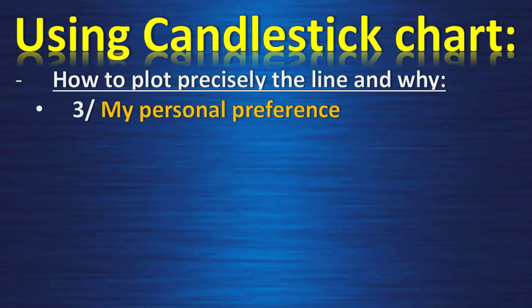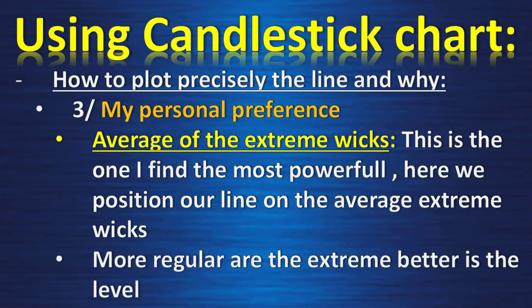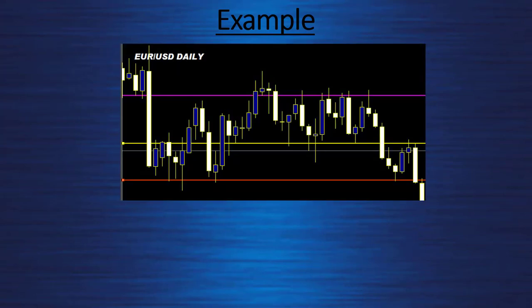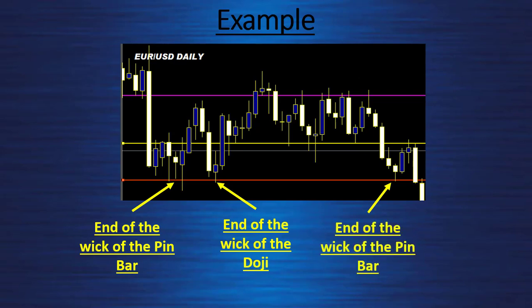Third way, my personal preference: the average of the extreme wicks. This is the one I find most powerful — we position our line on the average of the extreme wicks. The more regular the extremes, the better the level. Example on EURUSD daily: looking at the red line, we have the end of the wick of a pin bar, end of the wick of a doji, and end of the wick of another pin bar right here — this is our support.